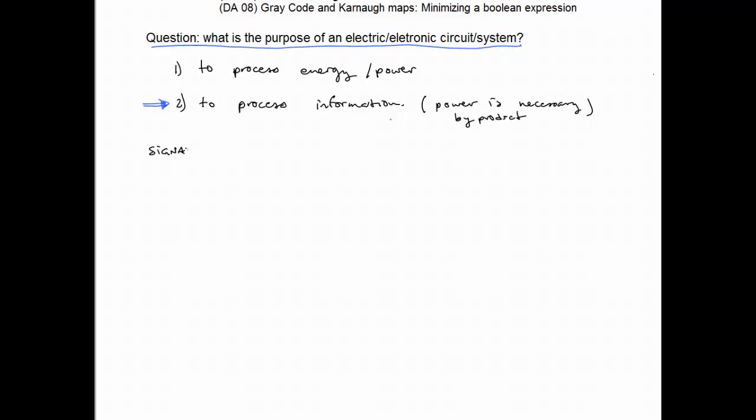So now we're ready to introduce a new term, and that is the signal. So we'll talk about electrical signals, though there are other types of signals as well. And an electric signal is a voltage or current that contains information. It contains or it represents information.